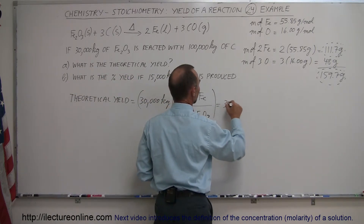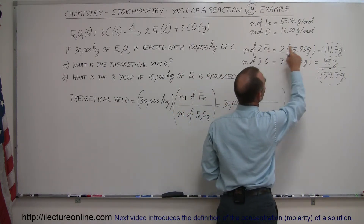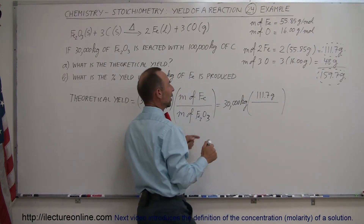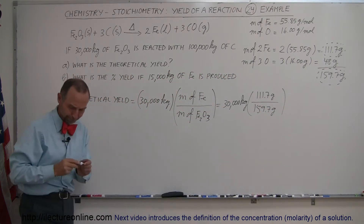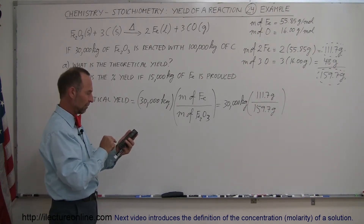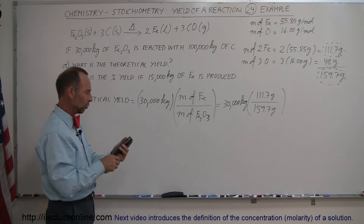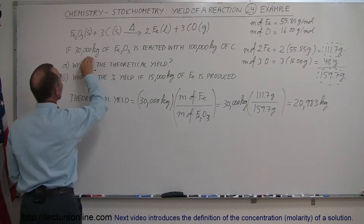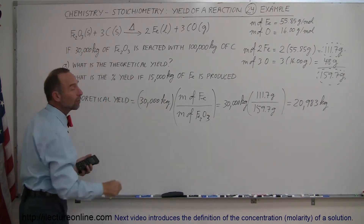So the calculation is: 30,000 kilograms × 111.7 grams (the molar mass of two moles of iron) ÷ 159.7 grams (the molar mass of iron oxide). Using the calculator: 30,000 × 111.7 ÷ 159.7 = 20,983 kilograms. This means that out of 30,000 kg of iron oxide ore, 20,983 kg is iron and the remainder is oxygen.